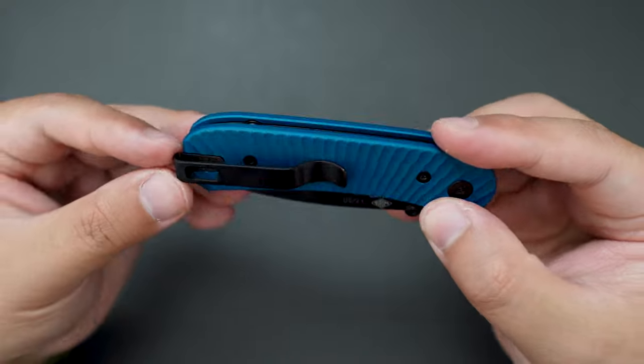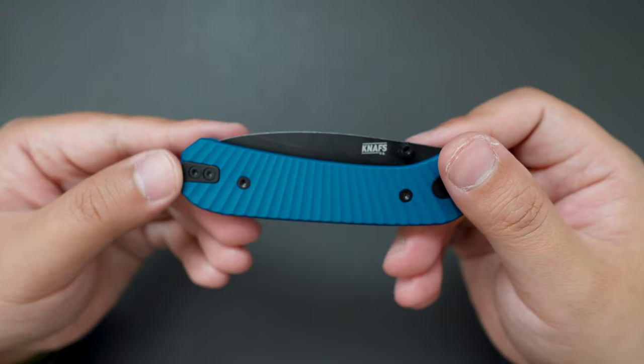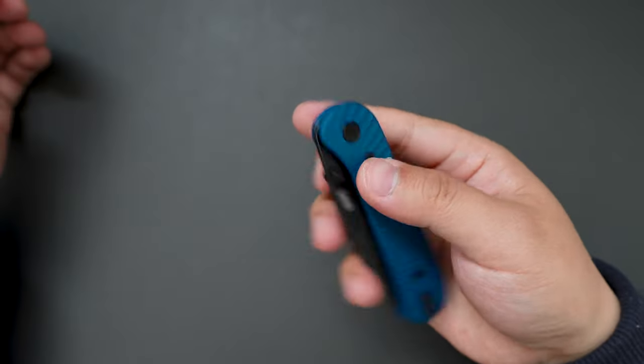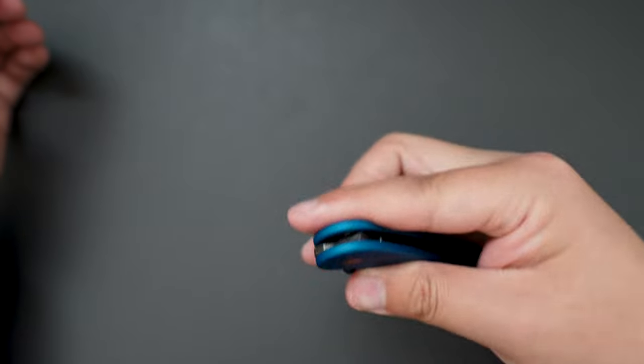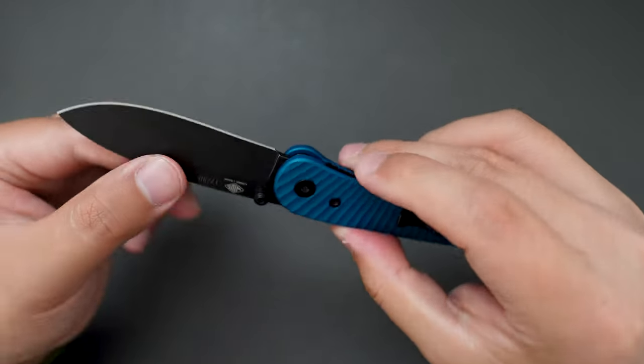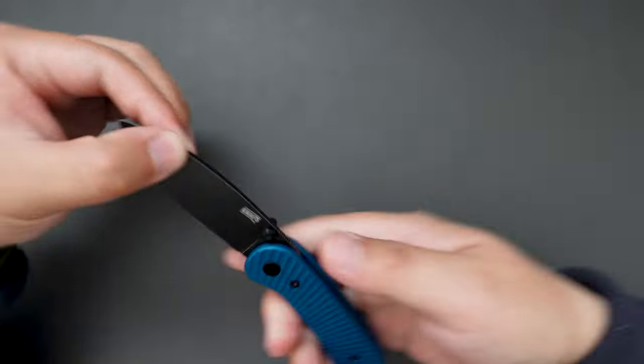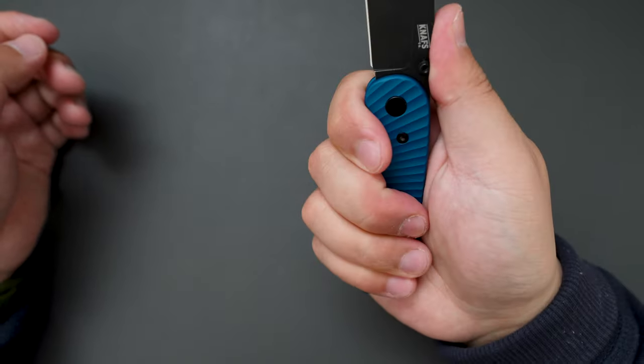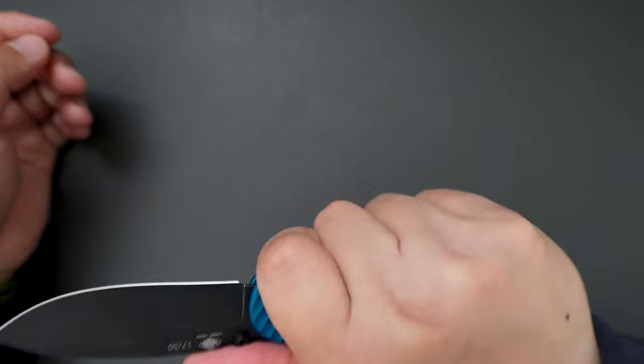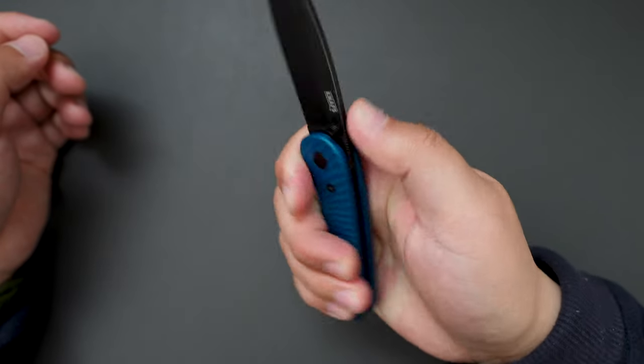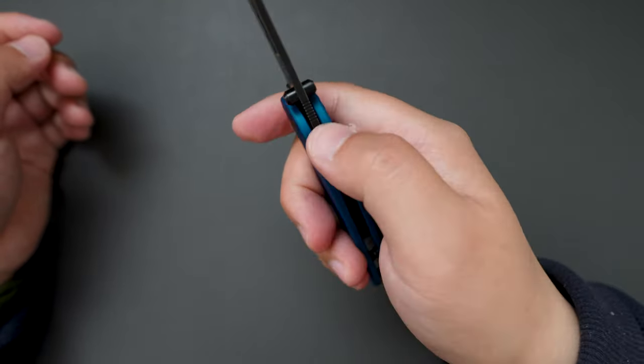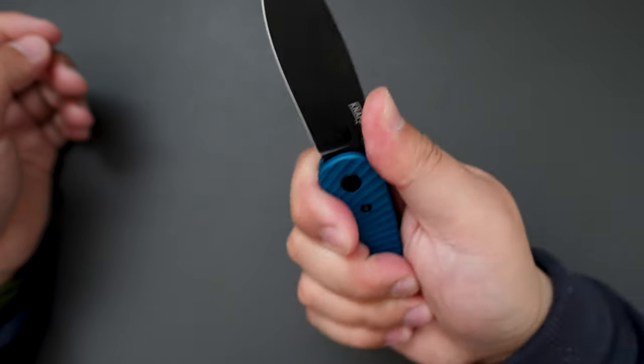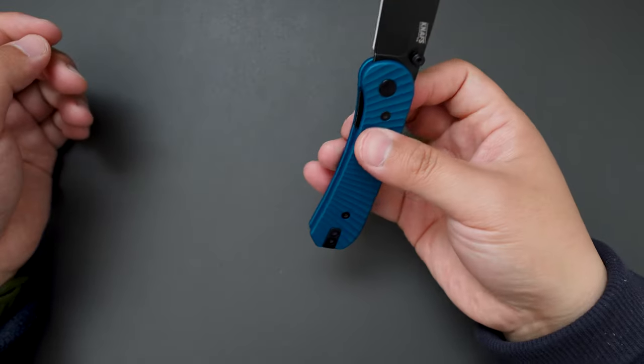Deep carry pocket clip, which is reversible. And you can also use the thumb stud to reverse flick it. Super good flicking action. And the ergos are pretty good. You can have four finger grip onto the knife. And there's some jimping here.